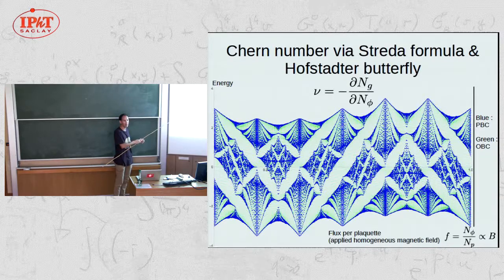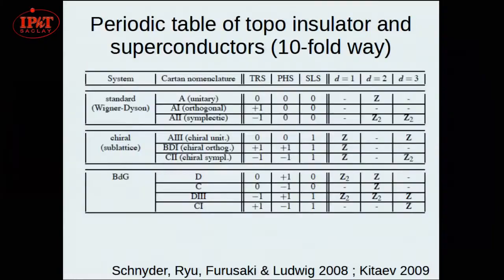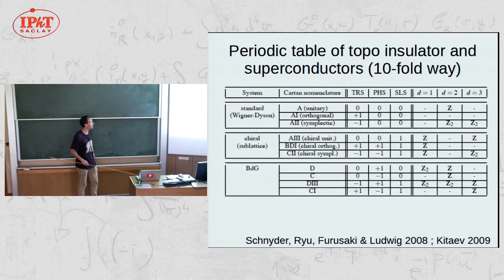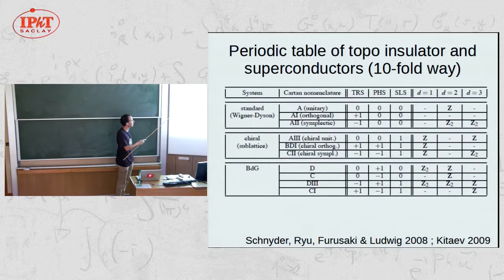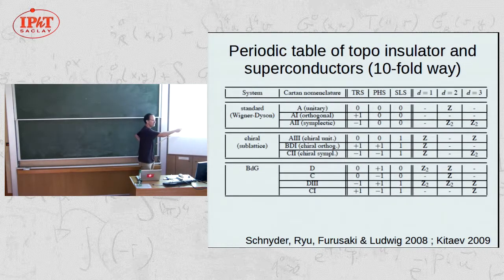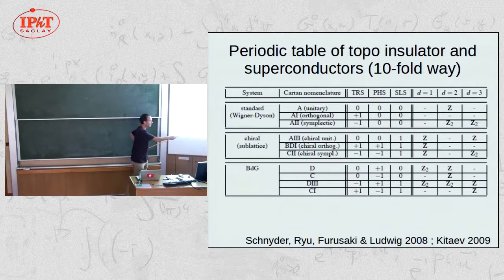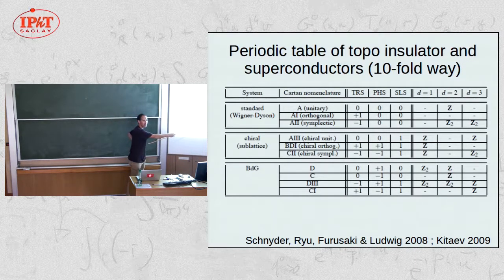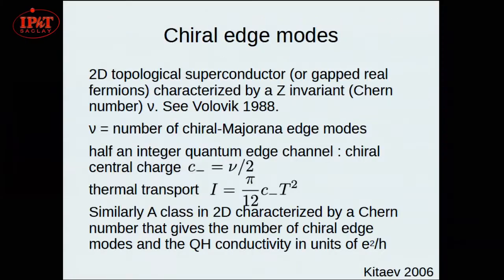One way to compute Chern numbers is to add a uniform magnetic field to the whole plane and study the Hofstadter butterfly — plotting the energy spectrum vs. applied flux. Bulk levels on a torus (blue) and open boundary condition levels (green) coincide except in bulk gaps, which are filled by edge states. Near zero applied field, using the Středa formula — how the number of states below a gap changes with applied flux — gives the Chern number. This was done for the Haldane model (Haldane butterfly) and can be done for any vortex pattern, e.g., the vortex-free sector.